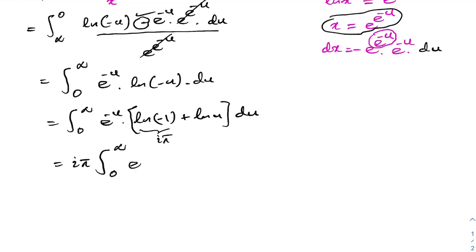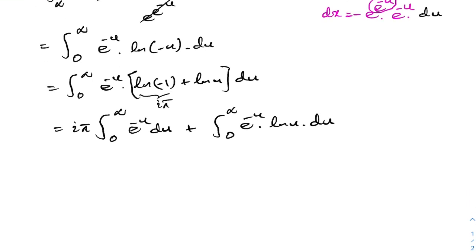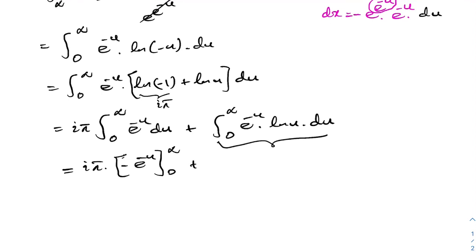So we have i times pi times the integral from 0 to infinity of e to the minus u du, plus the integral from 0 to infinity of e to the minus u times natural log of u du. The first integral equals minus e to the minus u evaluated from 0 to infinity, which gives 1. The second integral is a well-known result evaluated in previous videos, equal to minus gamma, the Euler–Mascheroni constant.